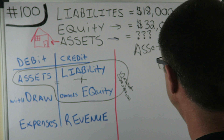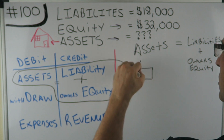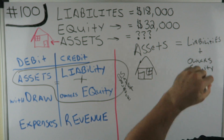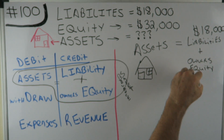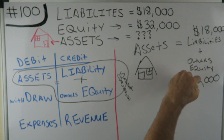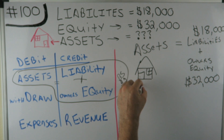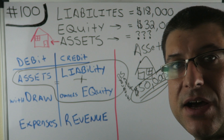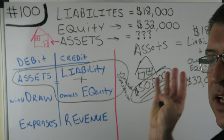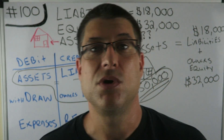We're about running out of time. So your assets is your building. Liabilities: $18,000. Owner's equity: $32,000. Assets equal liabilities plus owner's equity. So the house is worth $50,000. Does that make sense? Assets equal $50,000. You have a $50,000 house — you owe the bank $18,000 on it, and the owners of the company own $32,000 of it. I hope that helped.